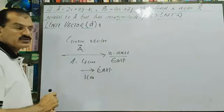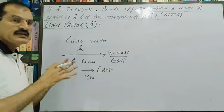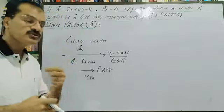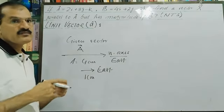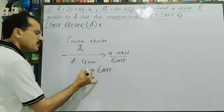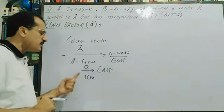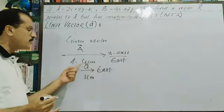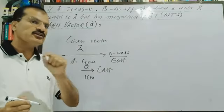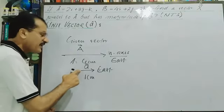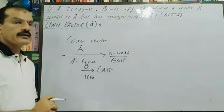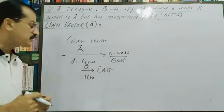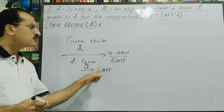Any general vector is indicated by a capital letter of the English alphabet. But its corresponding unit vector is indicated by the small letter with a hat symbol — for example, a-hat, b-hat, or c-hat. So a unit vector is a vector whose magnitude is unity but it indicates the direction of the given vector.